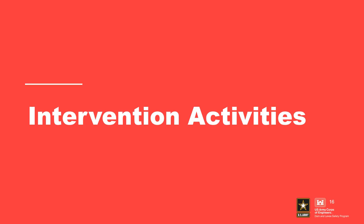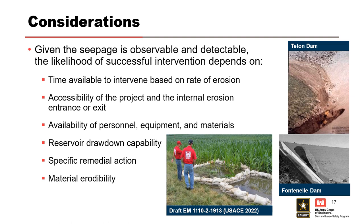Intervention efforts are likely to occur during all phases of the internal erosion process. Given the seepage is observable and detectable, the likelihood of successful intervention depends on several factors, including the time available to intervene based on the rate of erosion, which is a function of material erodibility, the accessibility of the project and the internal erosion entrance or exit, and the availability of personnel, equipment, and materials. Reservoir drawdown below a flaw or to reduce hydraulic gradient is the most successful intervention for large dams. Large events can have regional impacts, which can limit the availability of personnel since they may be spread out over several projects.